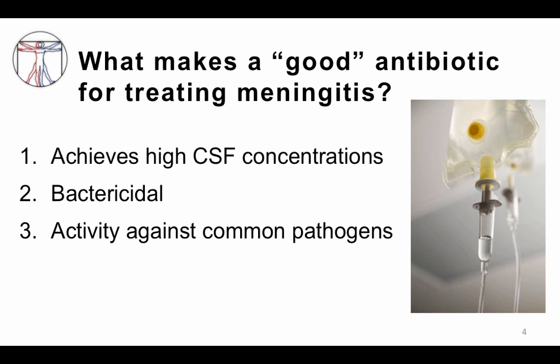Taking a step back and thinking about treatment, what makes a good antibiotic for treating meningitis? There are three key pieces. One: given that this is an infection that happens in the cerebrospinal fluid, you must use an antibiotic that achieves high concentrations in the CSF. Two: you want an antibiotic that is bactericidal — able to kill the bacteria in the absence of the immune system, particularly in the CSF. The CNS is a privileged space where it is hard to get a good immune response, so it's really key that you have a very effective antibiotic.